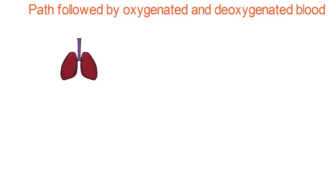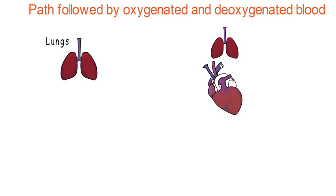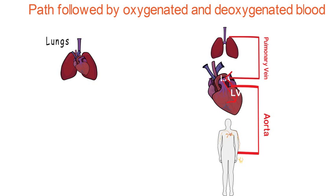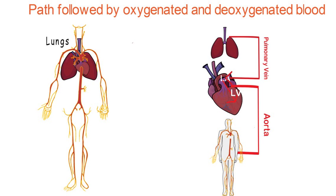Gaseous exchange of oxygen and carbon dioxide takes place inside the lungs. After the exchange, oxygen-containing blood from the lungs enters the left auricle of the heart via pulmonary vein. Then it goes to the left ventricle, and as the ventricle contracts, blood leaves the heart via aorta and travels to different parts of the body. Capillaries present at different points in the body help in gaseous exchange — the cells take up oxygen and give out carbon dioxide.